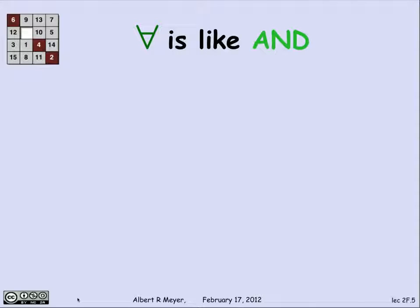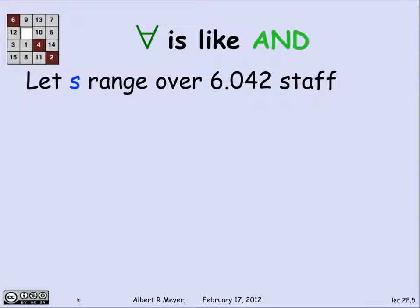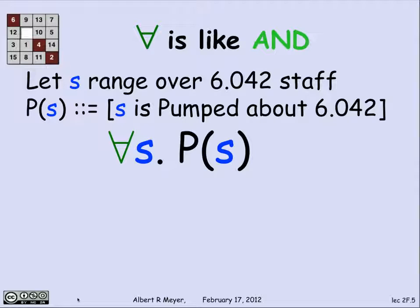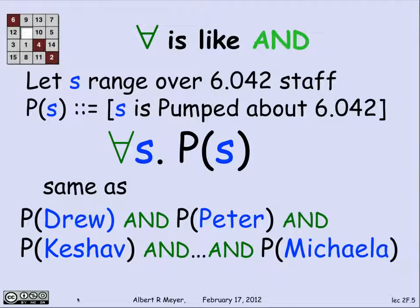The upside-down A 'for all' acts like an AND. Let's let a variable s range over the staff members in 6.042 this term, of whom there are about 30 counting the graders. Define predicate P of s to mean s is pumped about 6.042 — enthusiastic about being on the staff. If I tell you 'for all s, P of s,' that's the same as saying P of Drew is true AND P of Peter is true AND P of Keshav is true, and so on down to P of Michaela — 29 ANDs if there are 30 staff members.